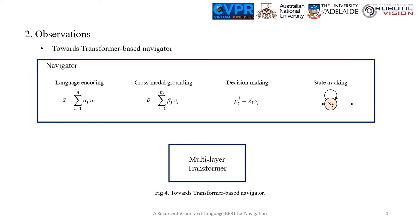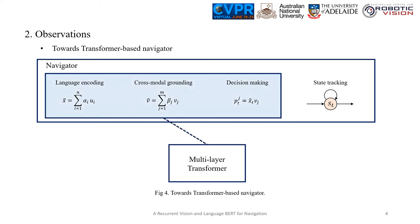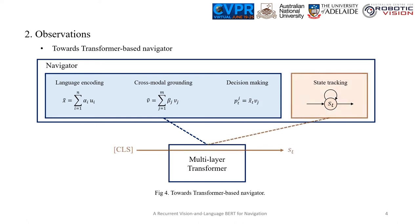We observe that the key components in the navigator network, including language encoding, cross-modal grounding, and decision-making, are closely related to the building blocks of the multi-layer transformer's soft attention mechanism. Meanwhile, the agent state, which is usually tracked by a recurrent network, could be replaced by the classification token defined in BERT, which is trained to collect the most valuable vision and language information.